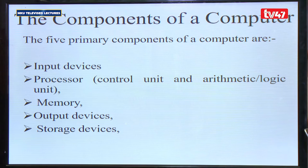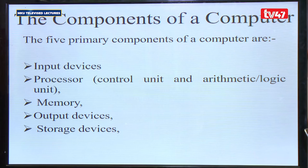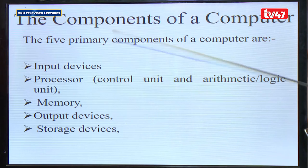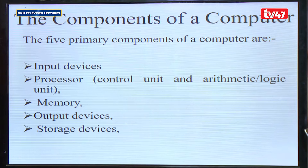We have five components of a computer. When we talk about components, we mean what makes this electronic device qualify to be called a computer. It has to have these five components. The first component is the input device. As the definition tells us, an input device is used to insert data. And then, where does the inserted data proceed to?